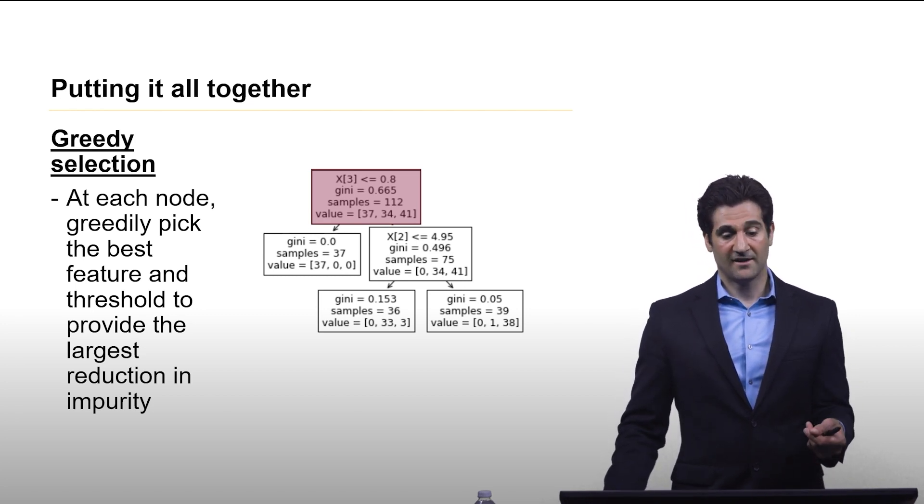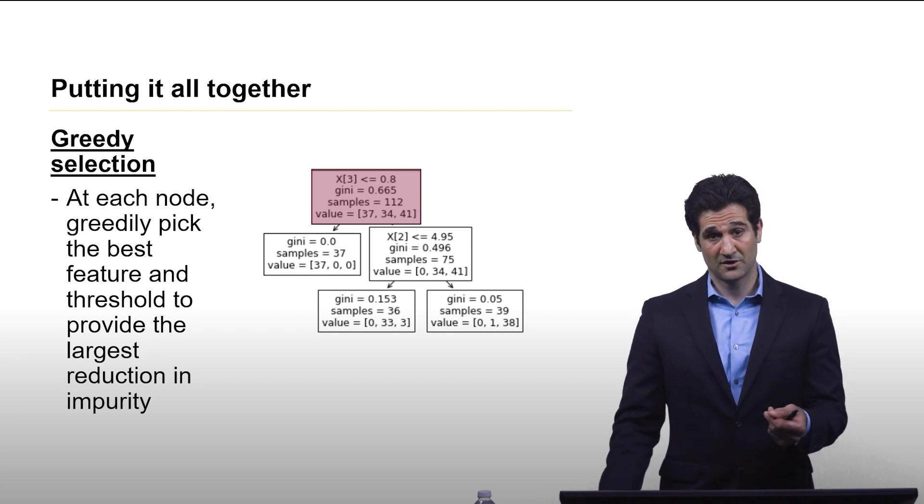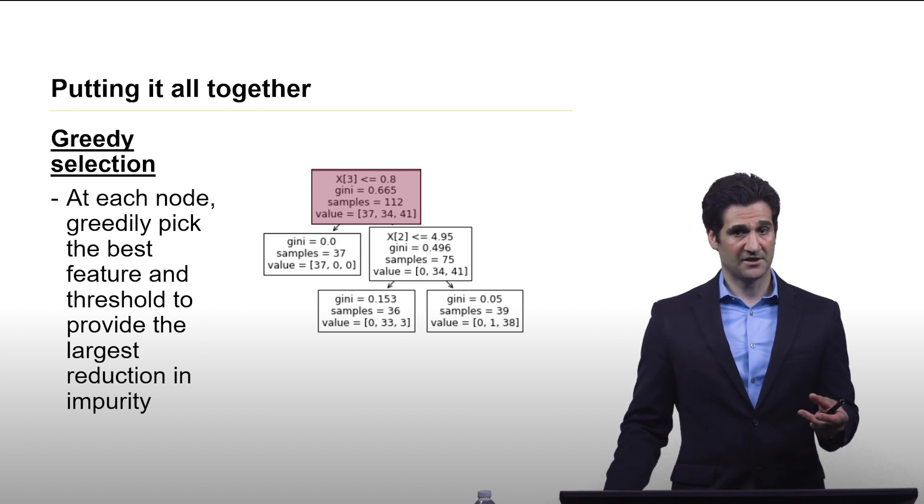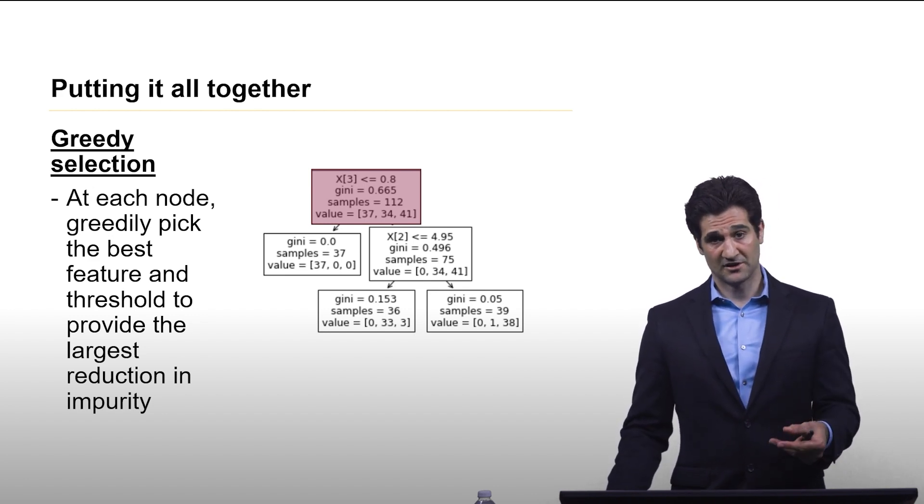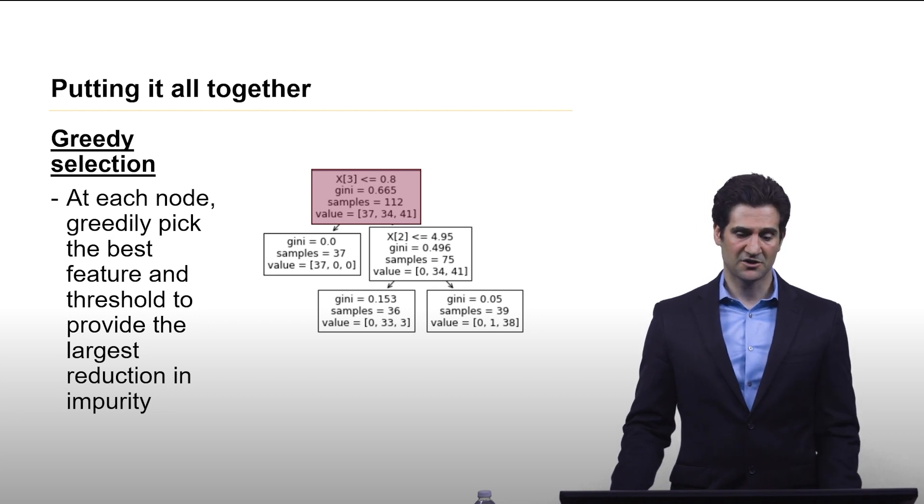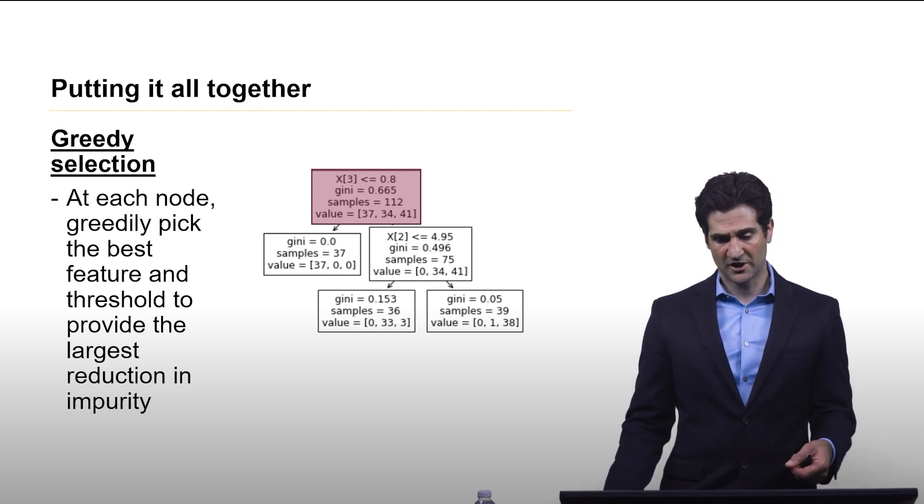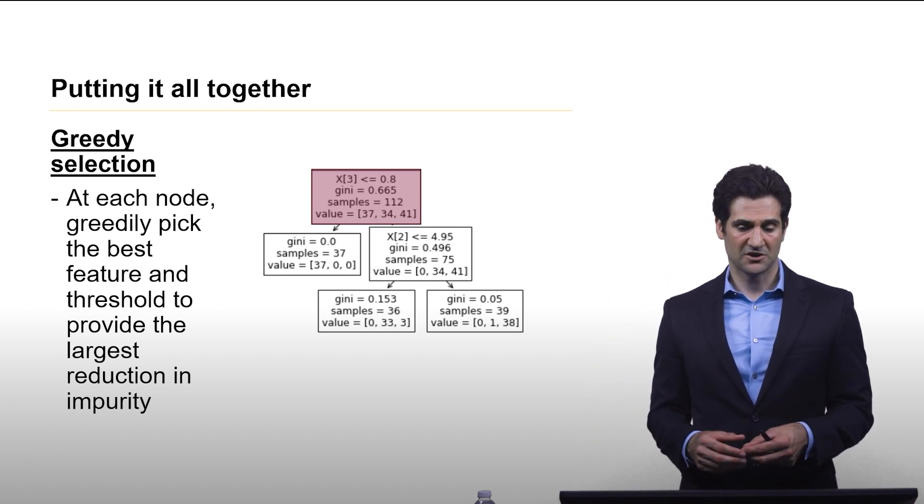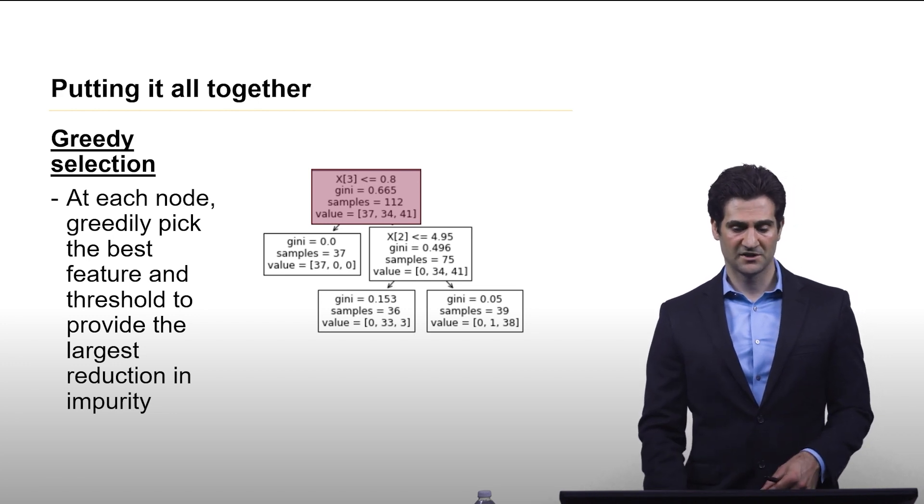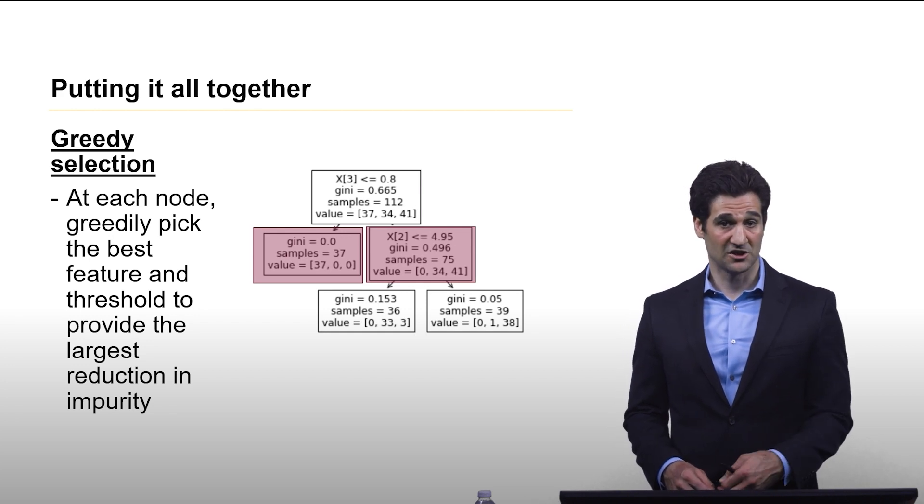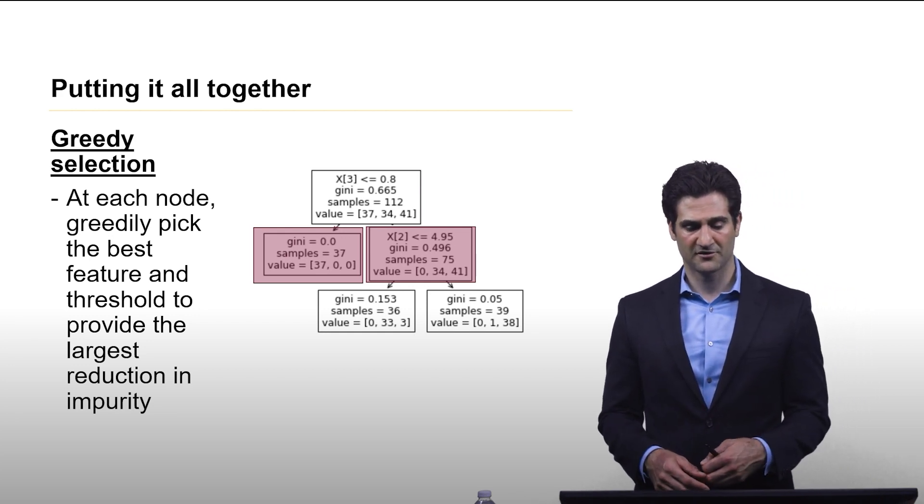Now, putting it all together, what we have is greedy selection is kind of the key principle of how the decision tree is created. And what it's going to do is, based on the specifications of things like the depth and the number of nodes of the decision tree, it's going to go through the data and make greedy splits, maximizing the reduction in impurity at each step. So here, at the root node, considering all the data, it selected feature number 3 and a threshold of 0.8. And we see for one portion of the data, the Gini index dropped to zero. We have something totally pure for the first class. Then the other node, something much less pure.